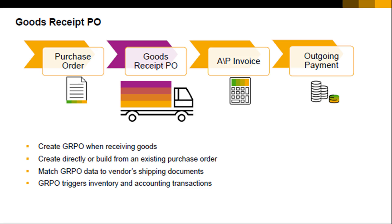Regardless of how you create your goods receipt PO, there should be no differences between the data in the goods receipt PO and the vendor's shipping document sent with the items, because the details in the vendor's document are legally binding. If there are any discrepancies between the base PO data and the vendor's shipping document, you should resolve them with the vendor before you post your goods receipt PO. It is essential that the quantities and prices in your goods receipt PO match the vendor's shipping document.